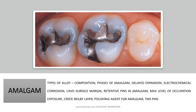Next is amalgam. You should know about the types of alloy for amalgam, the composition of each, what is the single-composition alloy, low copper and high copper alloys, the percentage of copper content for each, the different phases of amalgam, delayed expansion, the difference between electrochemical corrosion and galvanic corrosion, the cavosurface margin for amalgam, different types of retentive pins and coves, type of cavity preparation, creep, Beilby layer formed after polishing, the polishing agent used, and awareness about the threaded mate system — TMS pins.